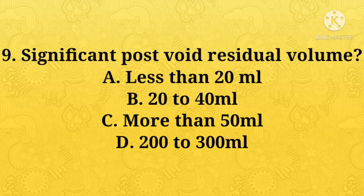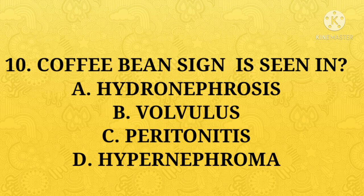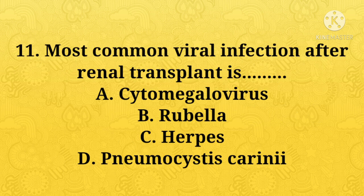Significant post-void residual volume — A: less than 20 ml, B: 20 to 40 ml, C: more than 50 ml, D: 200 to 300 ml. Option C, more than 50 ml, is the right answer. Coffee bean sign is seen in — A: hydronephrosis, B: volvulus, C: peritonitis, D: hypernephroma. Option B, volvulus, is the right answer.